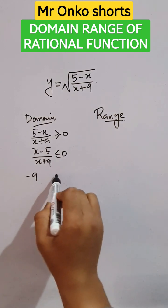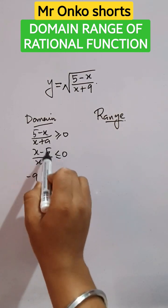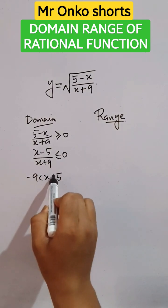Now the critical values are minus nine and five. Since the sharpest towards the variable, so x will lie in between these.